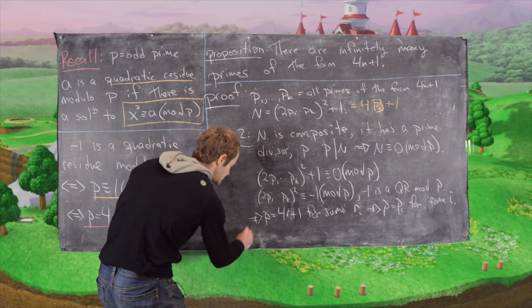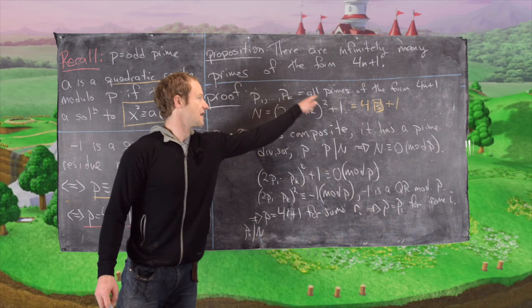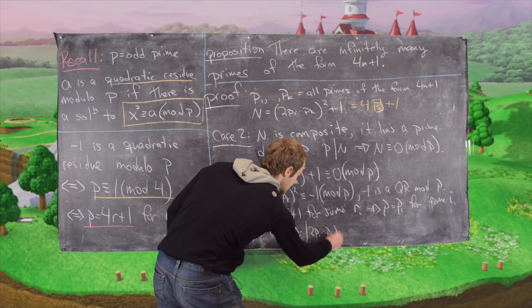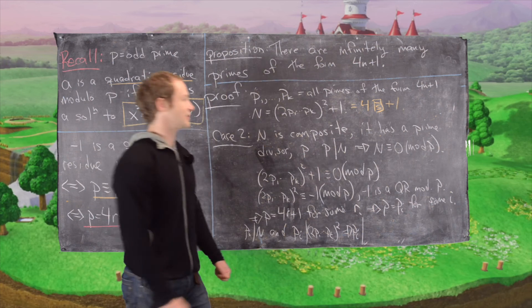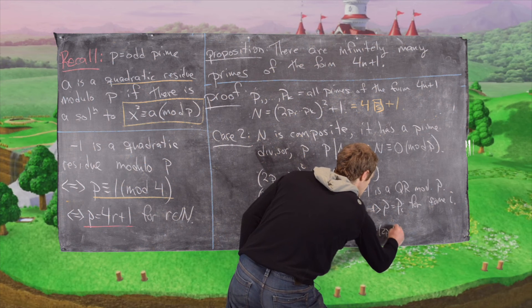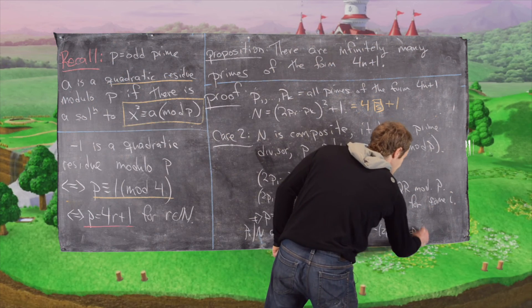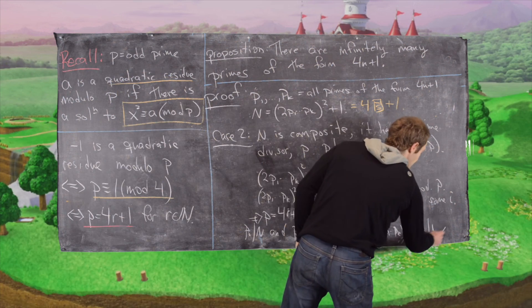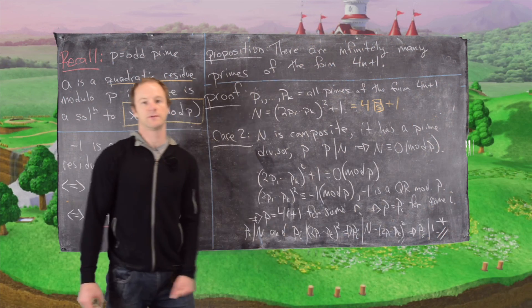So now what we'll notice is that pi divides N and pi divides 2p1 up to pk squared, which tells us that pi divides their difference, so N minus 2p1 up to pk squared. But notice the difference in those two is just one. So what we have is pi divides one. In other words, we have the number one is divisible by a prime, but we know that's impossible. So we've reached our second contradiction and we've ended our proof.